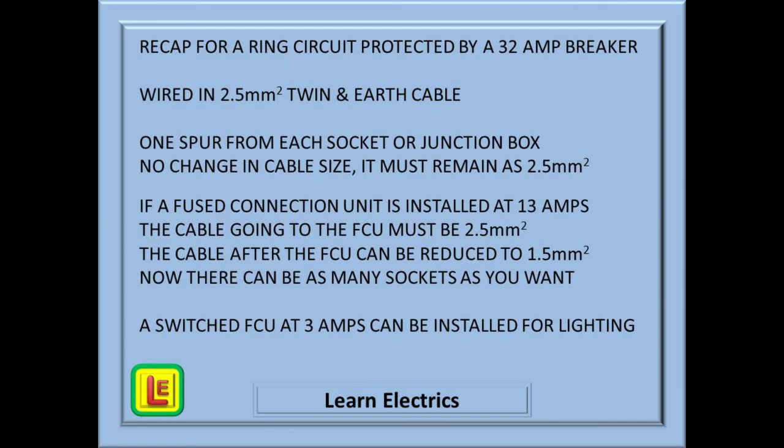That is it. It is not that difficult. Just follow some very basic rules. The main one being to protect the cable from overload. A recap then on what we have done. This is for a 32 amp ring circuit wired in 2.5mm twin and earth cable. Only one spur from each socket or junction box on the main ring. No change in cable size between the main ring and spur. It should remain at 2.5mm.